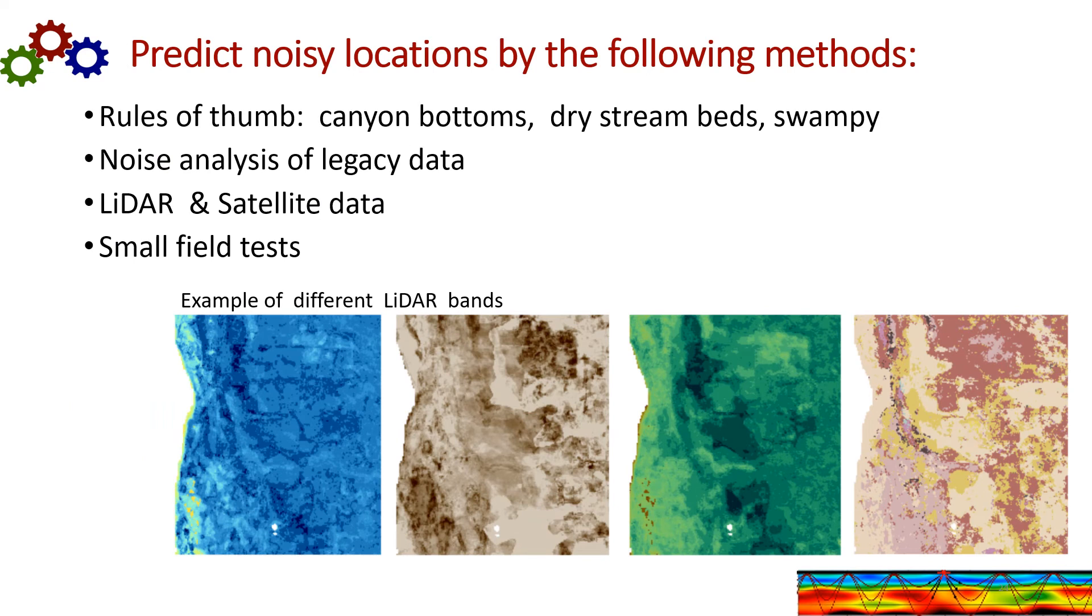You can predict noisy locations by several methods. You can use just rules of thumb like canyon bottoms, dry stream beds and swampy areas are noisy. You can also use noise analysis of a nearby legacy survey. You can use LIDAR and satellite data. And this is interesting. Here are some examples. Low frequency LIDAR actually transmits a few meters into the ground. So the different bands will tell you different things about the surface and the subsurface. So often a combination of these LIDAR bands will correlate with seismic noise of a nearby legacy data set. And finally, you can also do some small field tests.